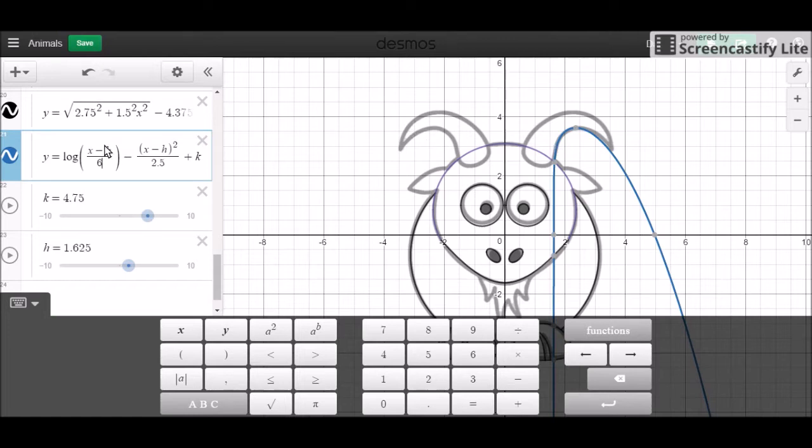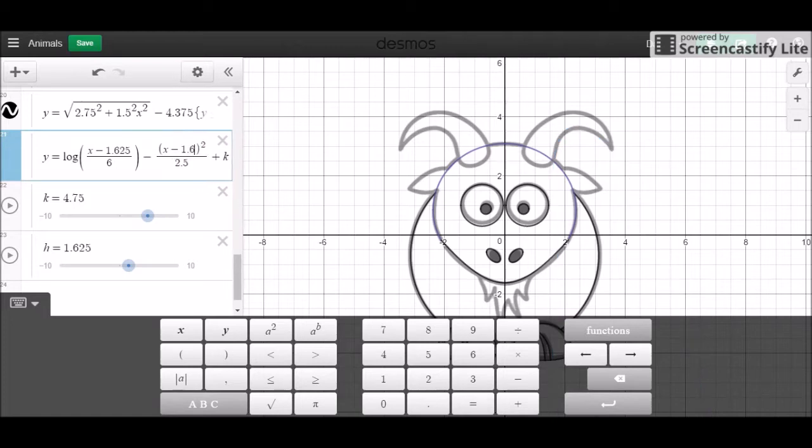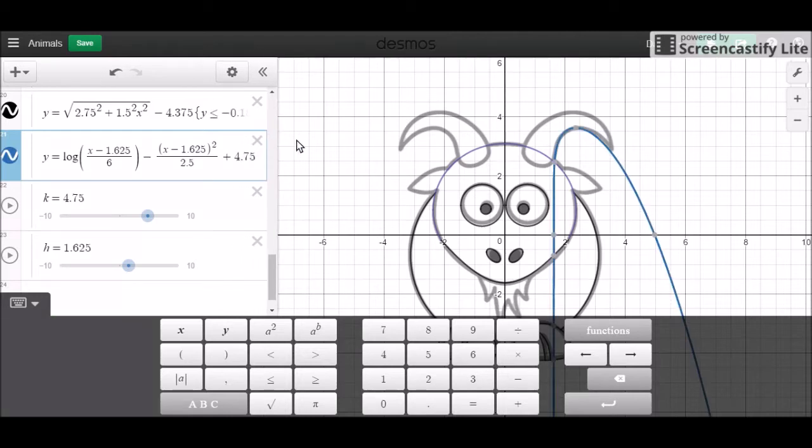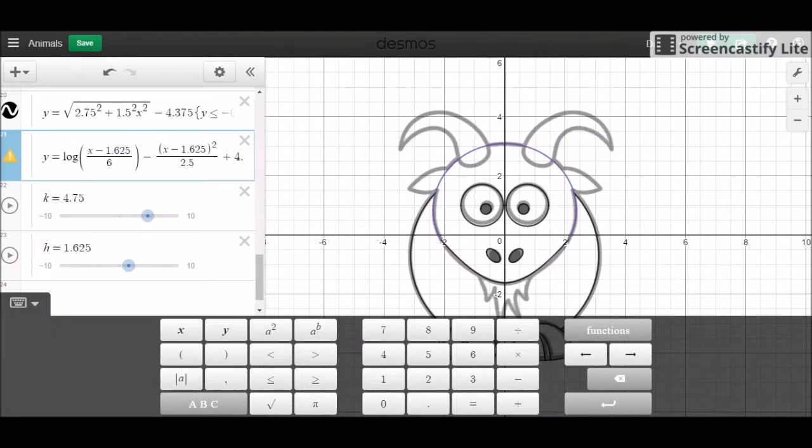So you can put those in. H is 1.625 or 1 and 5 eighths. And K is 4.75 or 4 and 3 quarters. To put a mixed fraction, you can put a hash notes together like that. I'll give mine just a decimal.